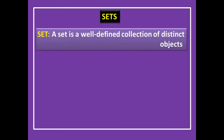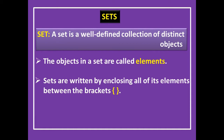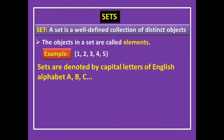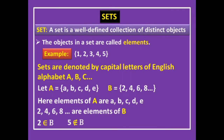A set is a well-defined collection of distinct objects. The objects in a set are called elements, and sets are written by enclosing all elements between flower brackets. For example, a set containing 1, 2, 3, 4... Sets are generally denoted by capital letters of the English alphabet — A, B, C, and so on. For instance, A = {A, B, C, D, E} and B = {2, 4, 6, 8, ...}. Note that 2 belongs to B whereas 5 does not belong to B.